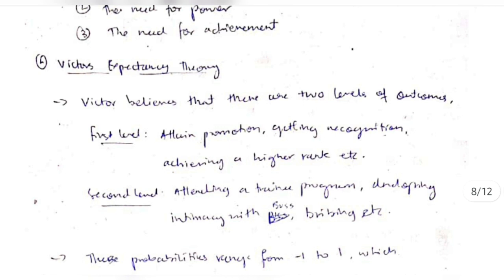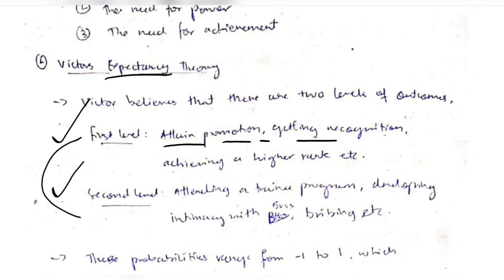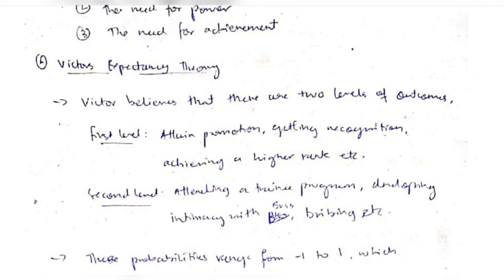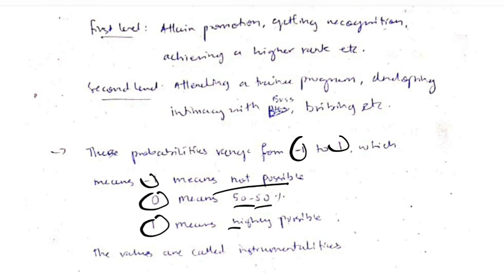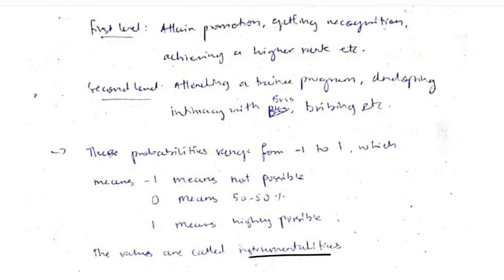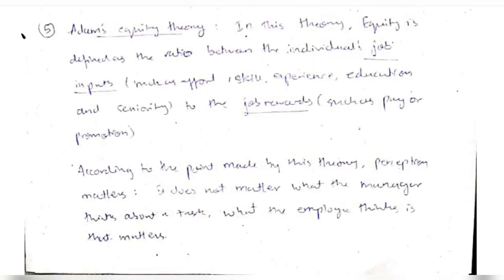The fourth theory is Vroom's Expectancy Theory. He believes there are two levels of outcomes: the first level is attaining promotion after an achievement, and the second level includes the means to achieve the first level — such as attending a training program, or negative ways like bribing. To measure the probability of outcomes, a range from minus one to one is used: minus one means not possible, zero means 50/50, and one means highly possible. These are called instrumentalities.